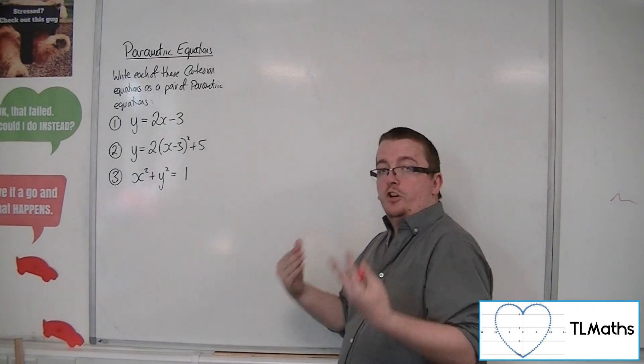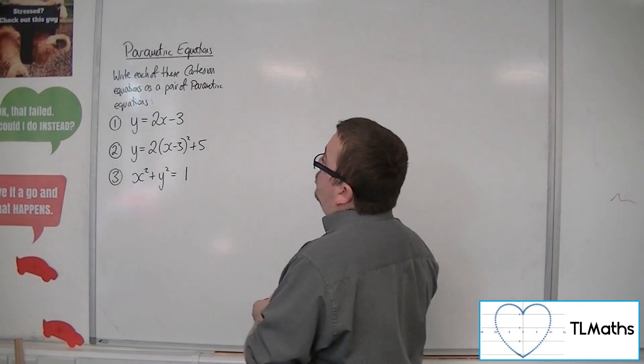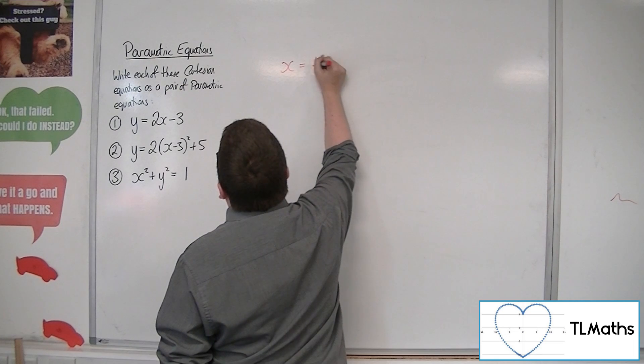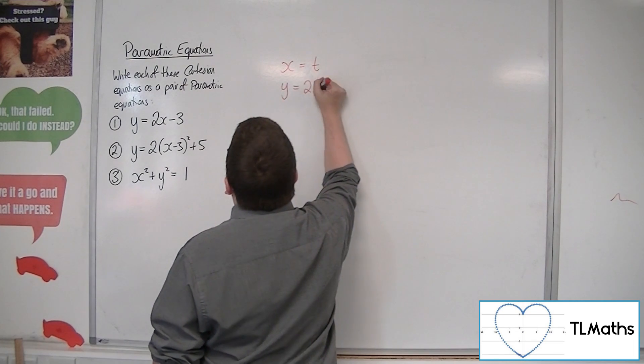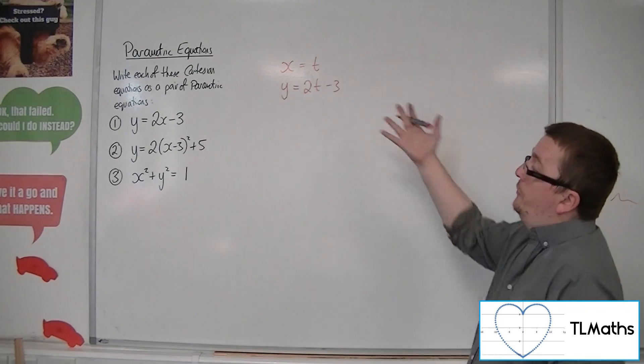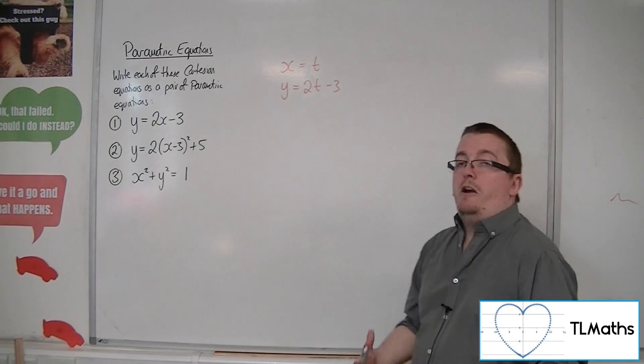Anything where you've got y equals just a function of x, what you could do for the first one is just say, well, let x be equal to t. So y would be 2t minus 3. And there we have it. There was the first one written as a pair of parametric equations.